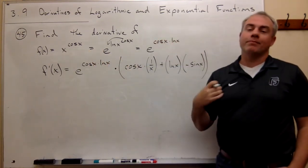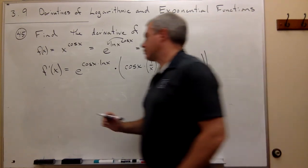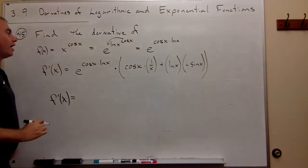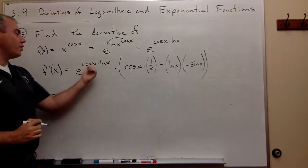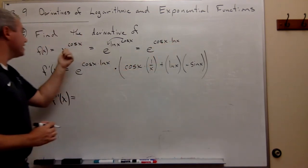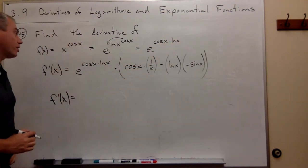Now, if we want to be cute, which since we have a minute, let's do it, f prime of x, we have e cosine x ln x. Well, e cosine x ln x is x to the cosine of x.